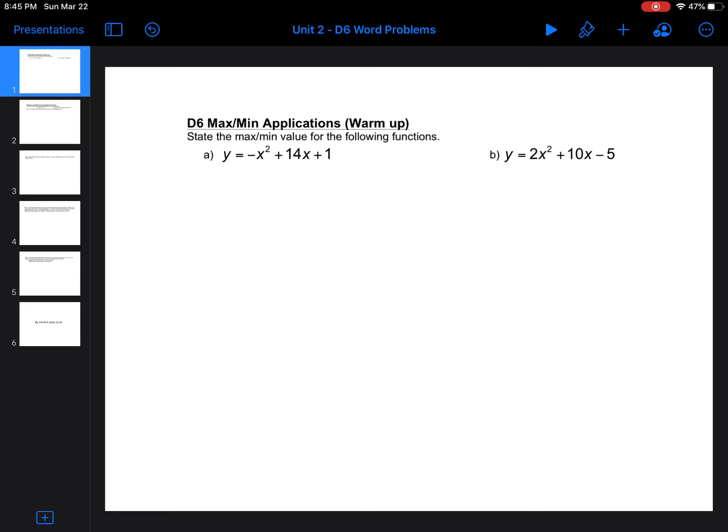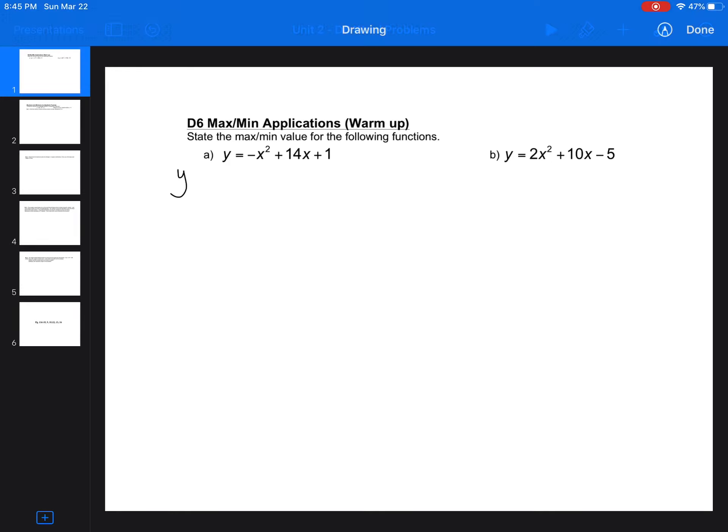Max-min applications are pretty much the same as any other application, but in this case we need to find the max or min value of a quadratic. So what we need to do is we need to find the vertex. On these first two, I'm going to show you two different ways. Typically, I complete the square every time, but sometimes it's easier to just use negative b over 2a to find the x and then substitute that back in for y.